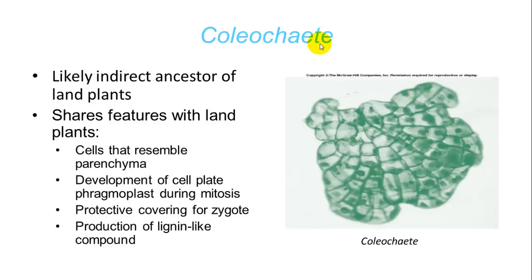The common ancestor to all plants appears to be something similar to Coleochaete. They are likely the indirect ancestor of land plants, and they share features such as cells that resemble parenchymal cells, they develop a cell plate during mitosis with their cell walls, they have a protective covering for their zygote, and they produce a lignin-like compound — and lignin is found in many plants in their cell walls as well.